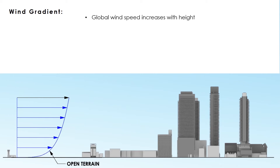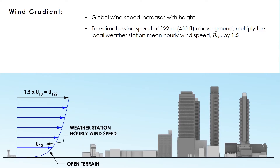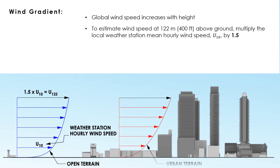To estimate the wind speed an RPAS will encounter at maximum altitude, the calculation can be made using reference wind speed and the exponential relationship. For urban flight, using a reference wind speed measured at takeoff location is not safe because the buildings in the city obstruct wind flow. Therefore, using a local weather station report is recommended, where mean hourly wind speeds unobstructed by buildings are measured at 10 meters above ground. From the weather station report, we suggest calculating the speed at 122 meters above ground, which is 1.5 times the weather station wind speed.